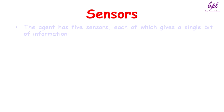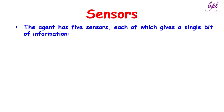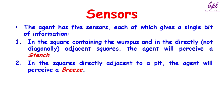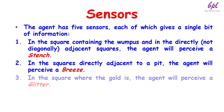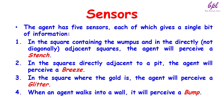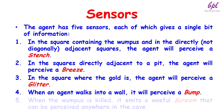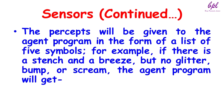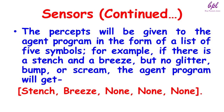Now let's talk about sensors. The agent has 5 sensors, each giving a single bit of information. In the square containing the Wumpus and in directly adjacent squares, the agent will perceive a stench. In squares directly adjacent to a pit, the agent will perceive a breeze. In the square where the gold is, the agent will perceive a glitter. When an agent walks into a wall, it will perceive a bump. When the Wumpus is killed, it emits an awful scream perceived anywhere in the cave. The percept is given as a list — for example, if there is a stench and a breeze but no glitter, bump, or scream, the agent program will get: stench, breeze, none, none, none.